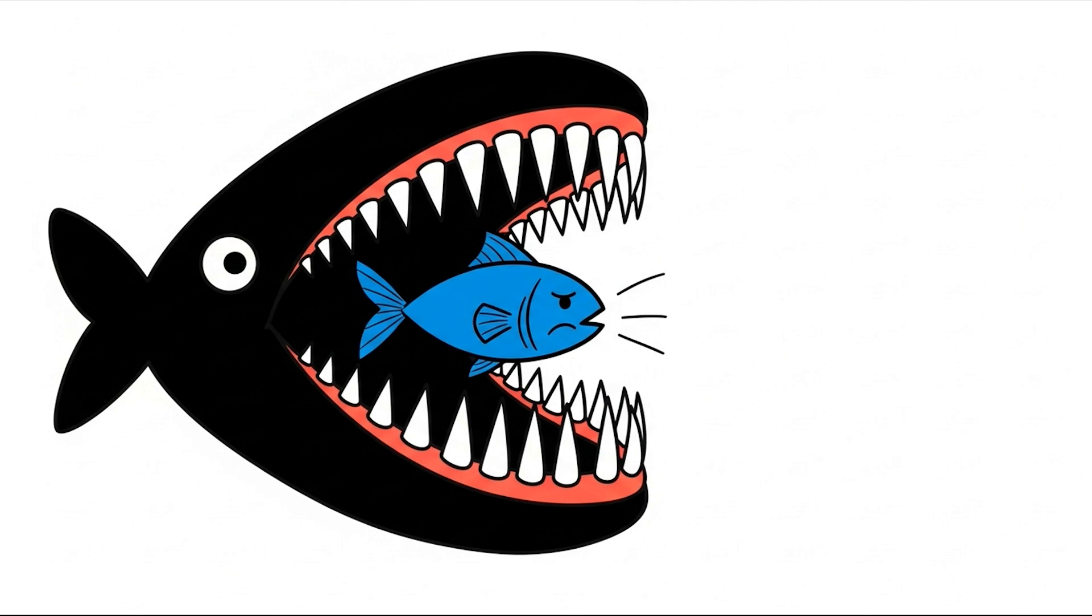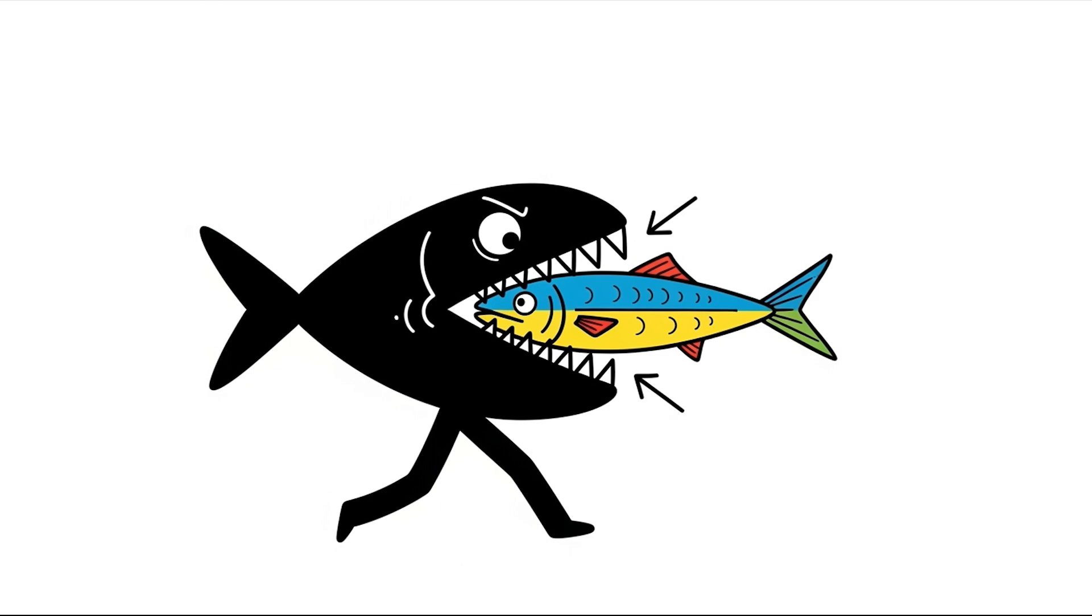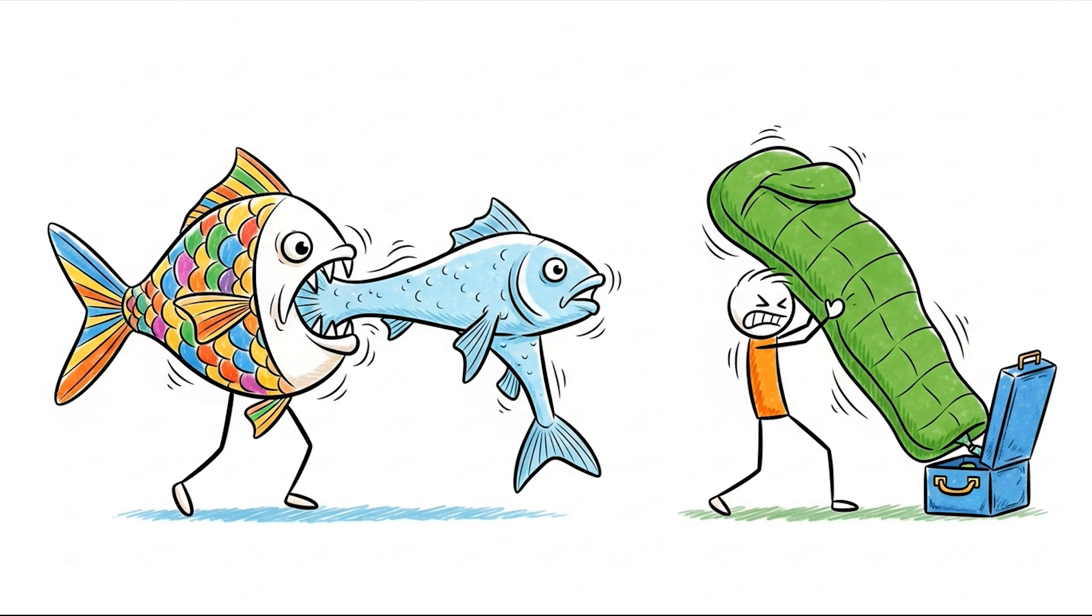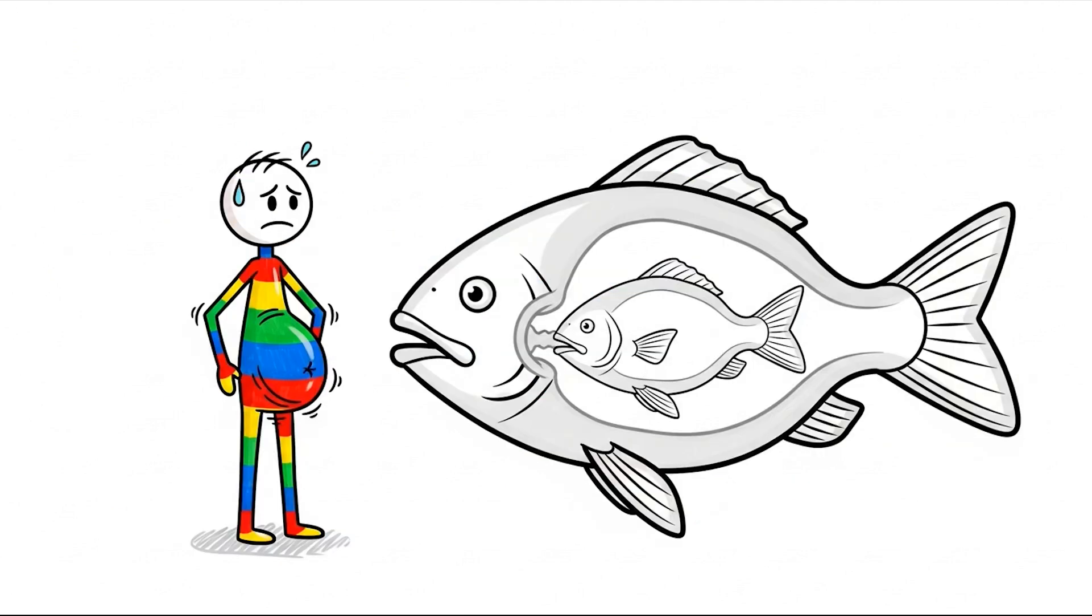Inside its mouth, rows of sharp teeth point backward, making escape impossible once something enters. When it catches a particularly large fish, it performs a bizarre, walking motion with its jaws, slowly stuffing the prey into its expandable stomach, much like trying to fit a sleeping bag into a tiny carry case.